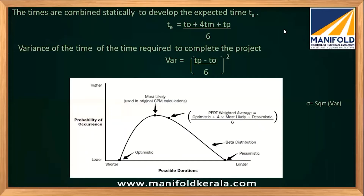When you have these three time estimates, you can calculate the expected time te. The formula is: te = (optimistic time + 4 × most likely time + pessimistic time) / 6. This is a weighted average where more weight is given to the most likely time, which is logical since the chances of the optimistic and pessimistic times occurring are very low.